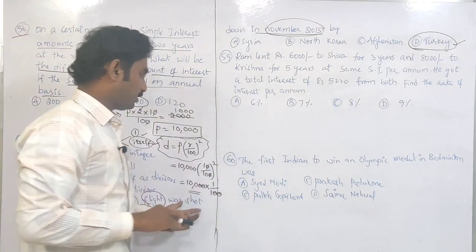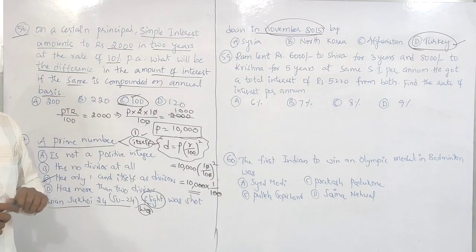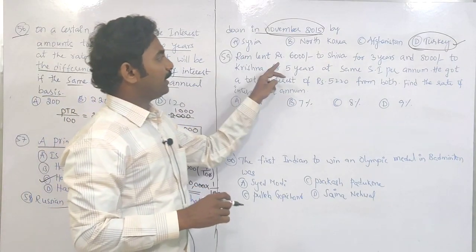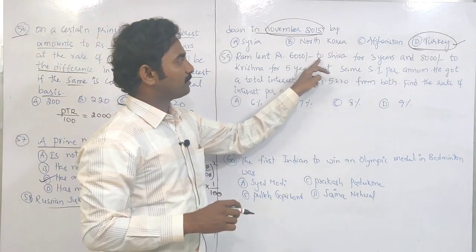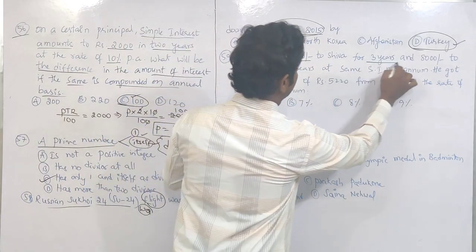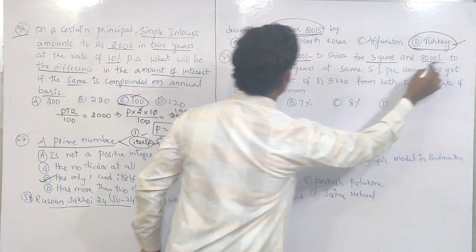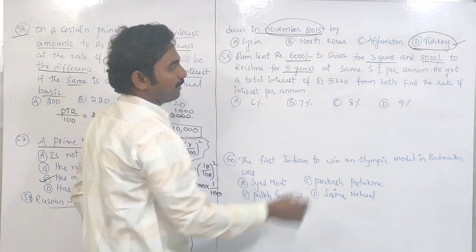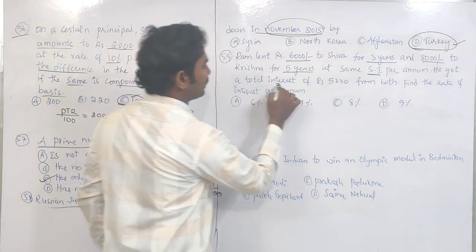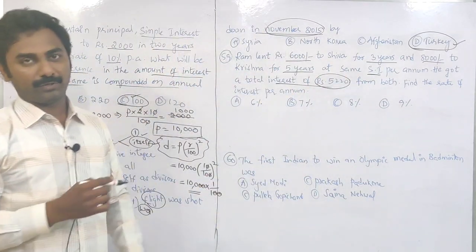After warning, the Russians continued into the border of Turkey, so they shot down that war flight in November 2015. The next question: Ram lent 6000 rupees to Shiva for 3 years and 8000 rupees to Krishna for 5 years at the same simple interest rate. He got total interest of 5,220 rupees.